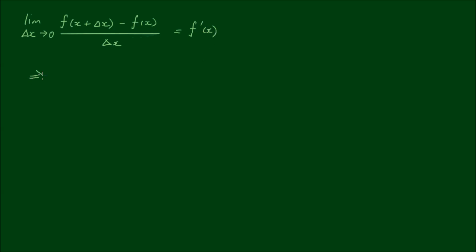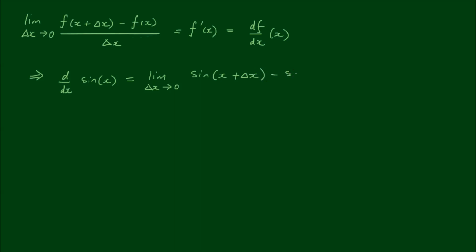So therefore the derivative of sine of x — and just to avoid confusion, I'll write it in df/dx notation as well — by the definition of the derivative is equal to the limit as Δx approaches zero of sine(x + Δx) minus sine(x), all over Δx.